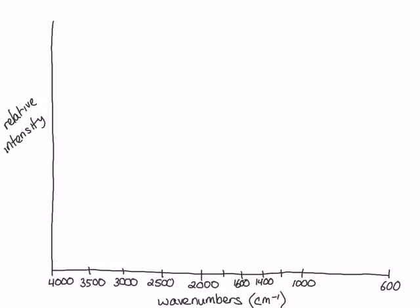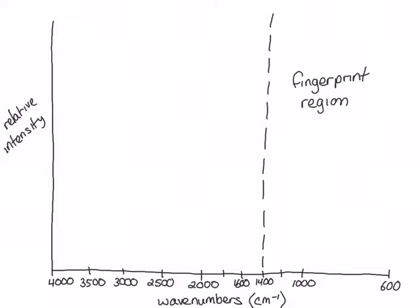The region from about 1400 wavenumbers down is called the fingerprint region. IR spectroscopy experts can learn a lot about the structure of a molecule from this region, but since we aren't experts, we're going to ignore this region because it's very complicated to understand the structural data obtained here.